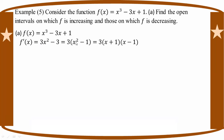A squared minus 1 factors as a difference of squares. So we get 3 times A plus 1 times A minus 1.